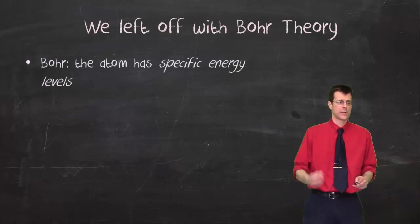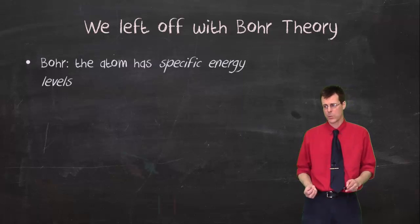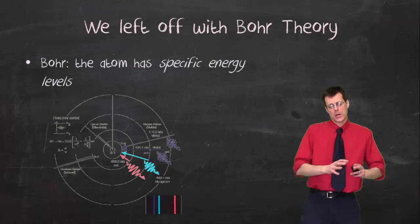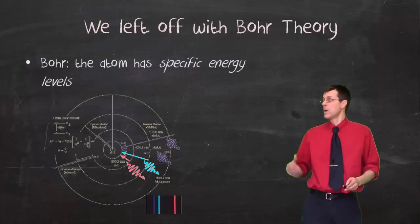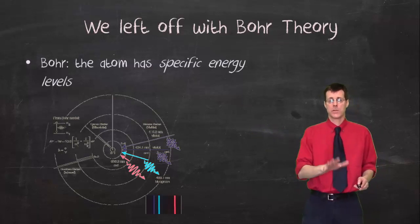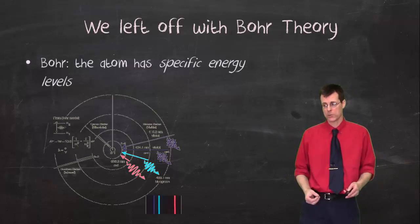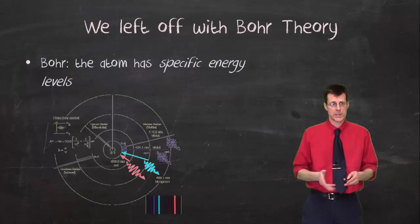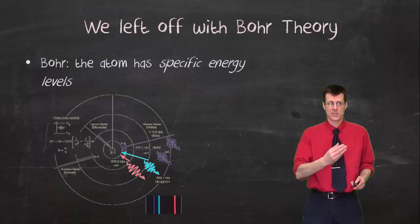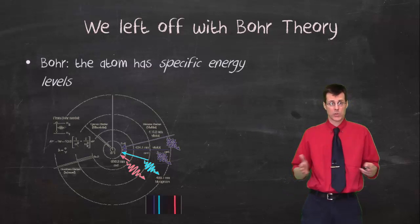Bohr talked about specific energy levels, very important concept in quantum theory as well. Atoms had these orbits or energy levels, the electrons in those atoms could move from a lower energy level to a higher energy level if they absorbed a specific amount of energy. They would then fall back down to that lower energy level, dumping the excess energy in the form of light. So we have these different colors of light coming out when we observed excited atoms. If we separated the light into components, we got very specific lines of energy. That was the line spectra.